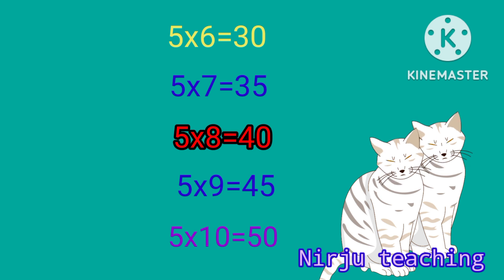Five times 6 is 30, five times 7 is 35, five times 8 is 40, five times 9 is 45, five times 10 is 50.